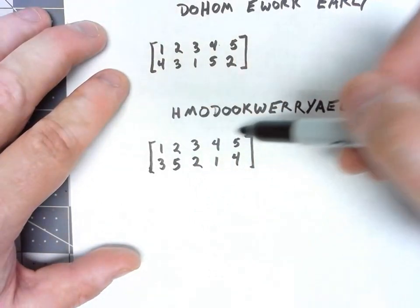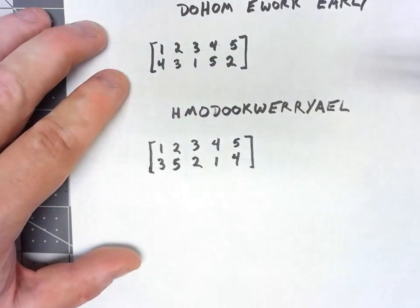So applying this, again, chunking it up into five, we can go back to the original message, which I won't go through.